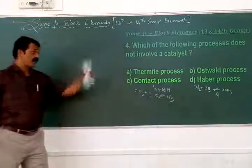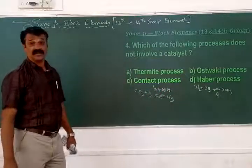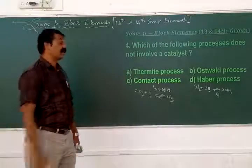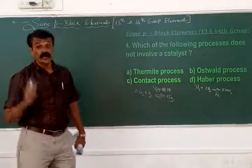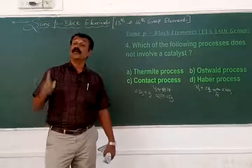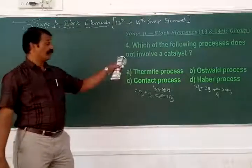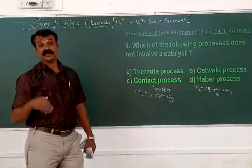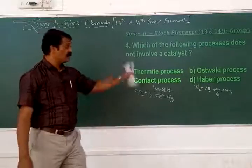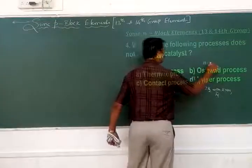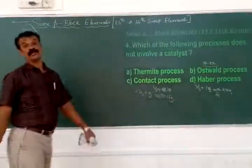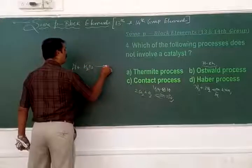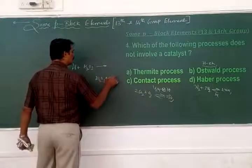In the Ostwald process for the manufacture of nitric acid, nitrogen combines with oxygen in the presence of platinum-rhodium as catalyst to form nitric oxide. The nitric oxide is further oxidized to nitrogen dioxide, which is absorbed by water to form nitric acid. This process also uses platinum-rhodium as catalyst.